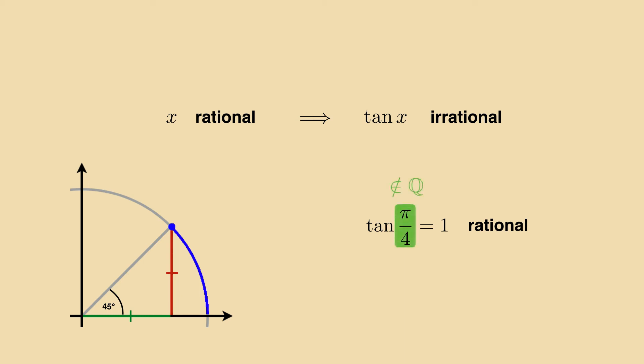Therefore, pi over 4 can't be rational, and thus, neither can pi. Pi is irrational.